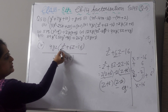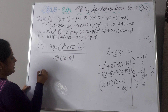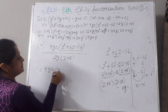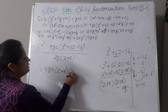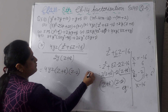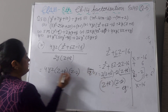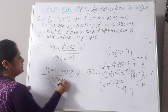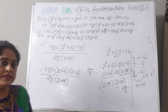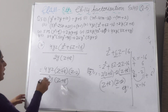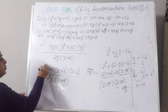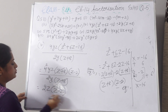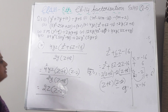Now replace the numerator: 4yz(z plus 8)(z minus 2) divided by 2y(z plus 8). Cancel z plus 8 with z plus 8, and y with y. Then 4 divided by 2 gives 2, and your answer will be 2z(z minus 2).